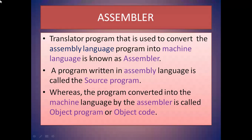Assembler: A translator program that is used to convert the assembly language program into machine language is known as assembler. A program written in assembly language is called the source program, whereas the program converted into machine language by the assembler is called the object program or object code.